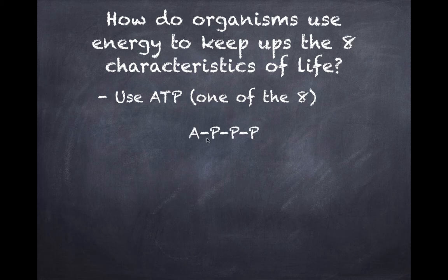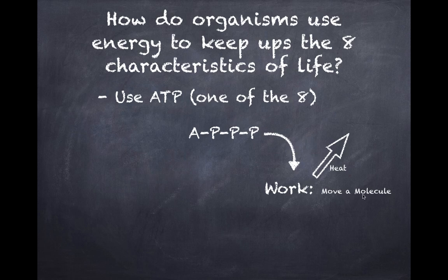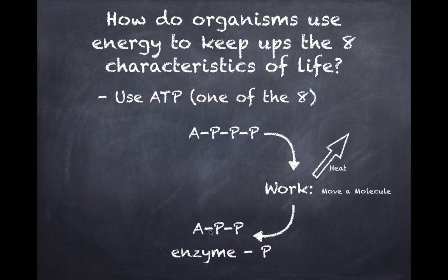So how do organisms use energy to keep up those eight characteristics of life? One of the eight characteristics was 'use energy,' and from day one I told you we're going to call it 'use ATP' — because when organisms use energy, they are using ATP. We start with a molecule with three phosphates attached to it. That ATP can be used to do work inside the cell, such as moving sodium from one side of a membrane to another, and whatever energy doesn't go into moving that molecule is lost in the form of heat.